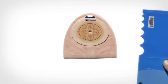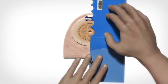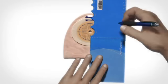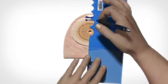Having measured the size of your stoma with the stoma guide, use the stoma guide to draw a cutting line matching these measurements on the back side of the adhesive.